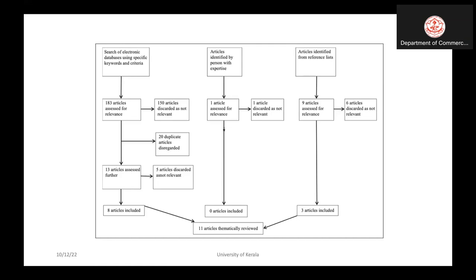Here in this chart, taken from a paper, it shows 183 articles assessed for relevance. This paper is basically a thematic literature-based paper, and they have taken 183 articles from electronic databases such as Google Scholar, Scopus, and Web of Science.